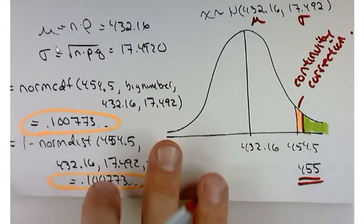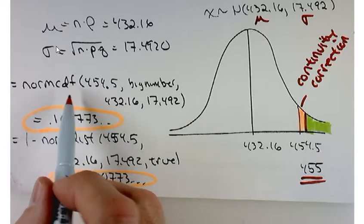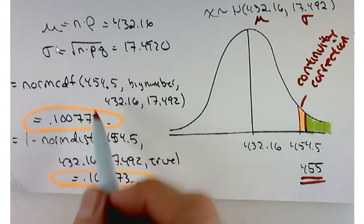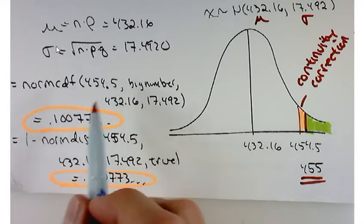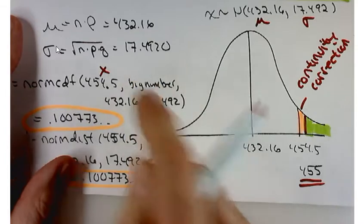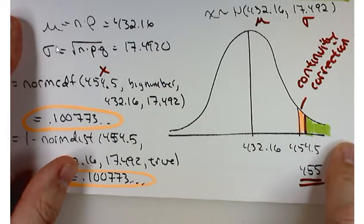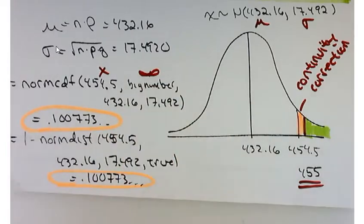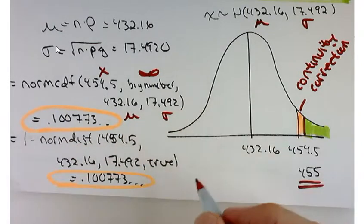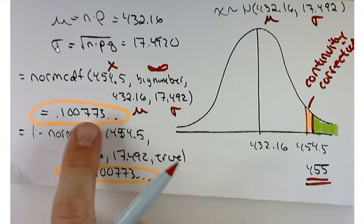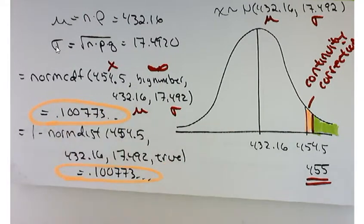If you're doing that with your graphing calculator, you would use normal CDF. You'll never use normal PDF in this class. Normal CDF of x. That's your lower limit. Your upper limit is really infinity. It's not very easy to type in infinity on your graphing calculator. So you just type in a really big number. A bunch of nines or a one followed by a bunch of zeros. Whatever you find convenient. And then your mean and standard deviation. So that would be your normal CDF. And you get something which is pretty close to what we got up above. About 0.1008. So it's really a good approximation.